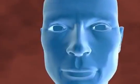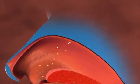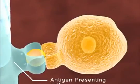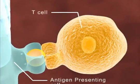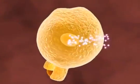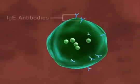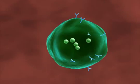On first exposure, the inhaled allergen enters the mucous membrane lining the nasal passages, where it is taken up by the antigen-presenting cell, which presents it to the T-cells. These T-cells activate the B-cells to release substances called IgE antibodies against the allergen. These IgE antibodies sit on the surface of the mast cells.